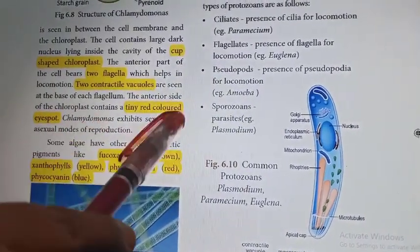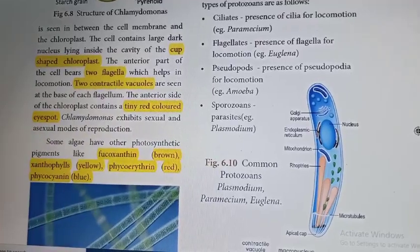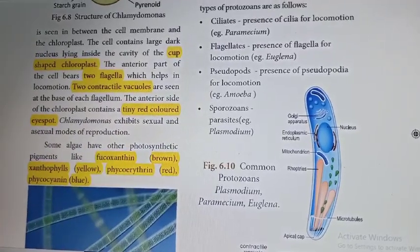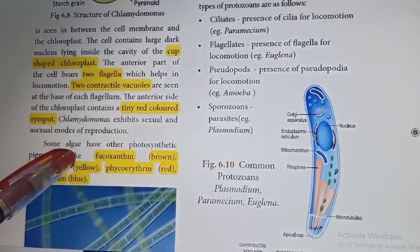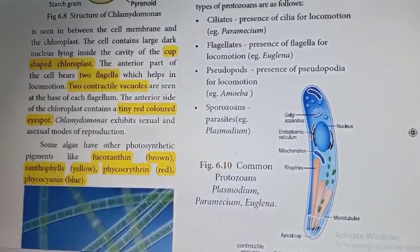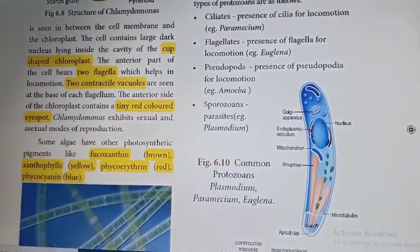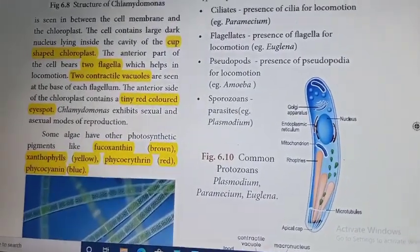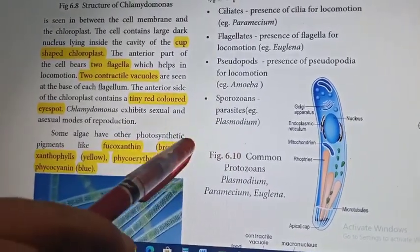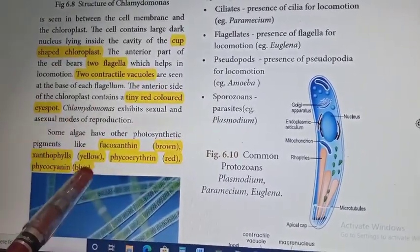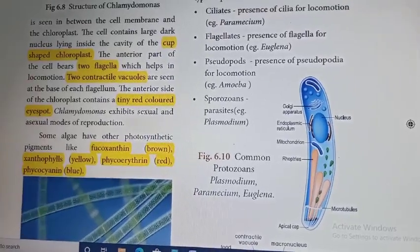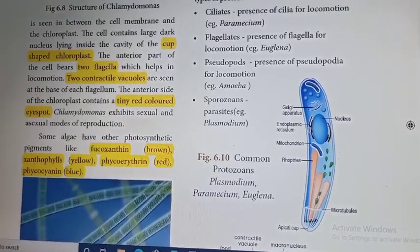Chlamydomonas exhibits both sexual and asexual reproduction. Algae are classified into four types based on the presence of photosynthetic pigments: brown algae, yellow algae, red algae, and blue-green algae.